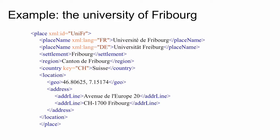Then we give the location of the place with the location element, containing a Geo element with the coordinates. That's something that will let us place the university on a map later. We also give the address of the university — the postal address. And that's about it, though of course we could use many further elements to describe the place.